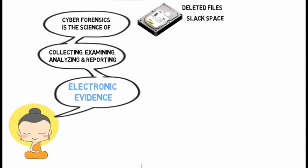Then we have slack space. All file systems use file allocation units to store files. Even if a file requires less space than the file allocation unit size, an entire file allocation unit is still reserved for the file. For example, if the file allocation unit size is 32 KB and a file is only 7 KB, the entire 32 KB is still allocated but only 7 KB is used, resulting in 25 KB of unused space. This unused space is referred to as file slack space and it may hold residual data such as portions of deleted files.